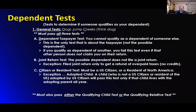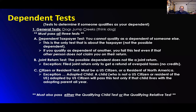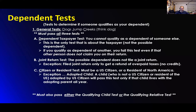I should have this — the dependency tests. This is to find out if someone qualifies as your dependent. This is really a good guideline. It is set up as a thought process so you understand what the three guidelines are. The general tests are dependency, joint return test, and the citizenship test. They actually use a guide: 'if dogs jump creeks.' It makes it so that particular saying helps some people learn it.